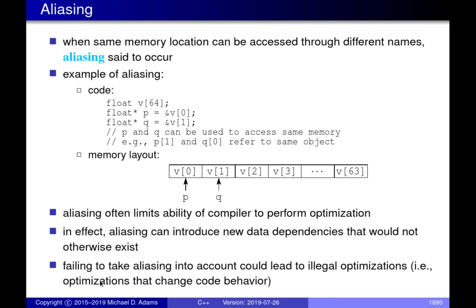The next impediment to vectorization is aliasing, which we've touched on previously. Aliasing can introduce bugs — for example, into assignment operators and compound assignment operators. Aliasing is when you can access the same memory location through different names. This code example illustrates aliasing: we have an array of floats called V with 64 floats, a pointer P pointing to the first element, and another pointer Q pointing to the second element (index one).